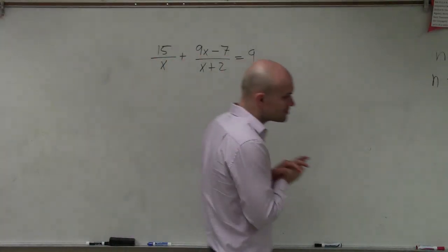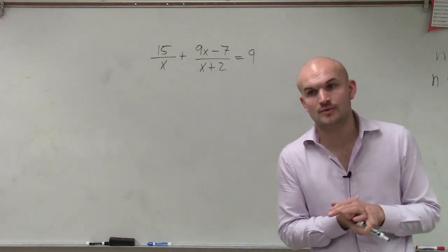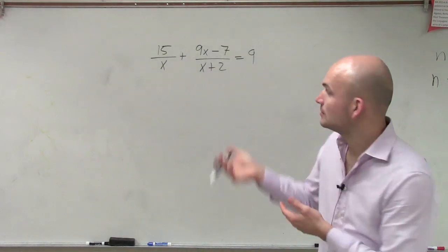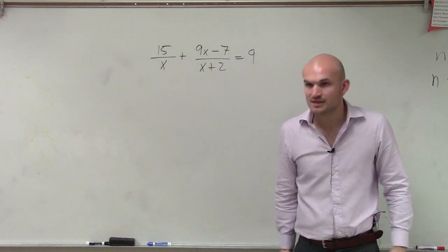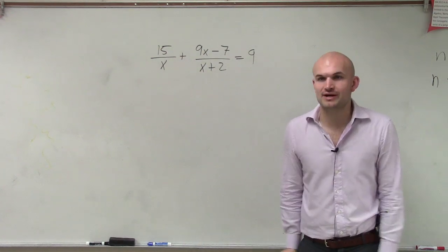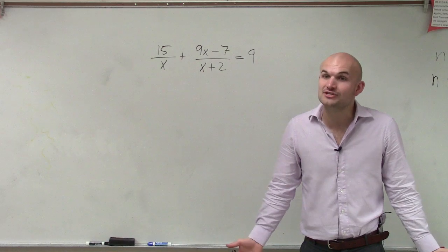Alright, so for this problem, what we need to do is solve our rational equation, which means we have two rational terms. Again, ladies and gentlemen, we have denominators, right? We have some fractions. We don't want fractions.